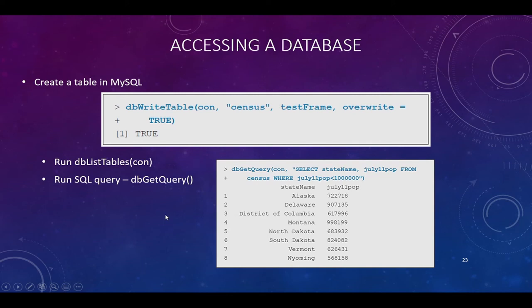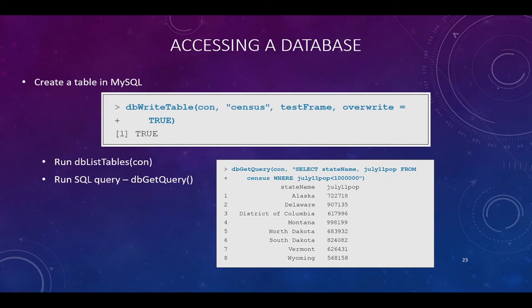From that, now we can go and get data out of the database. What we do is use `dbGetQuery` — database get query. We send it the connection, and then we send it the SQL format. If you're not familiar with SQL, the commands in all capitals are the SQL commands. The three basic commands are SELECT, FROM, and WHERE. After SELECT you give it a column name, FROM needs a table name, and WHERE lets you filter and limit that data. For example: SELECT state name and July 2011 population FROM the census table WHERE the July 2011 population is less than a given value — and it's going to give those values back.